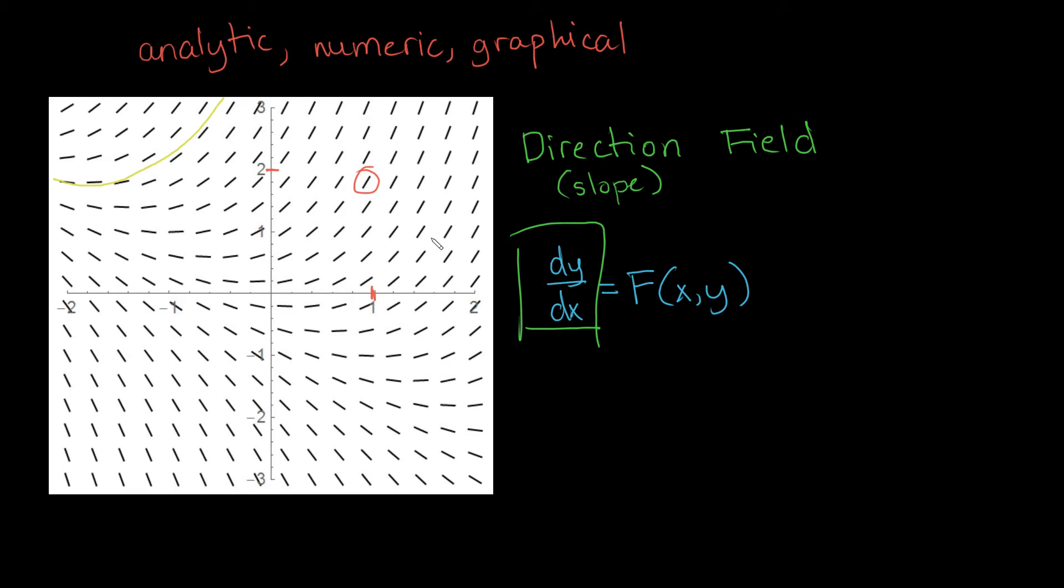Because by definition of being a solution to this differential equation, it must satisfy the differential equation. And if it satisfies the differential equation, the dy dx of the solution must always be equal to this function over here. So the slope at any given point must also be equal to the function.